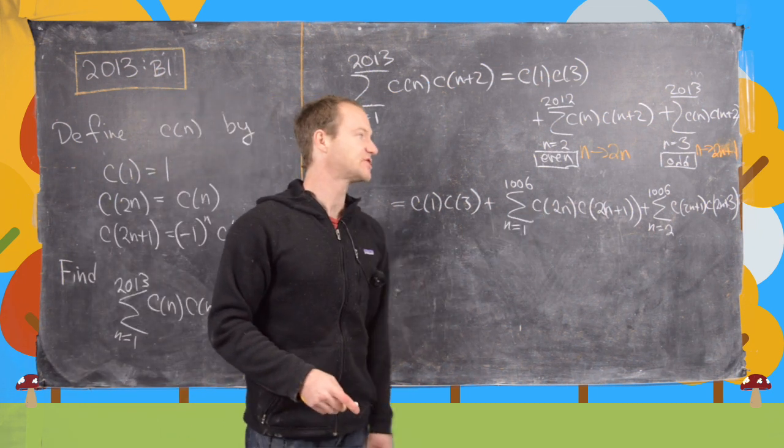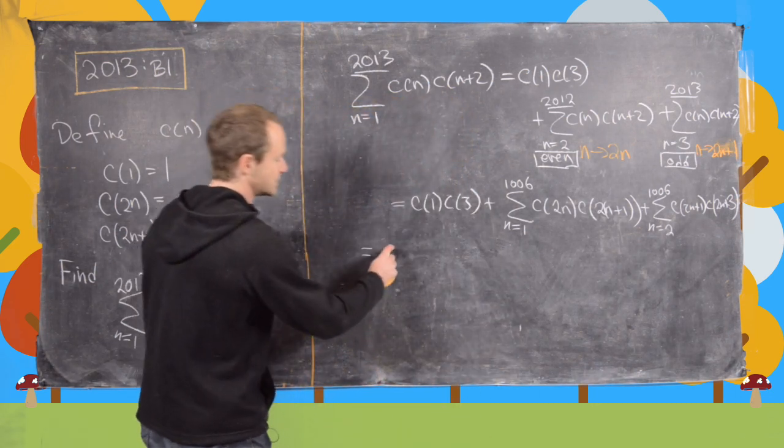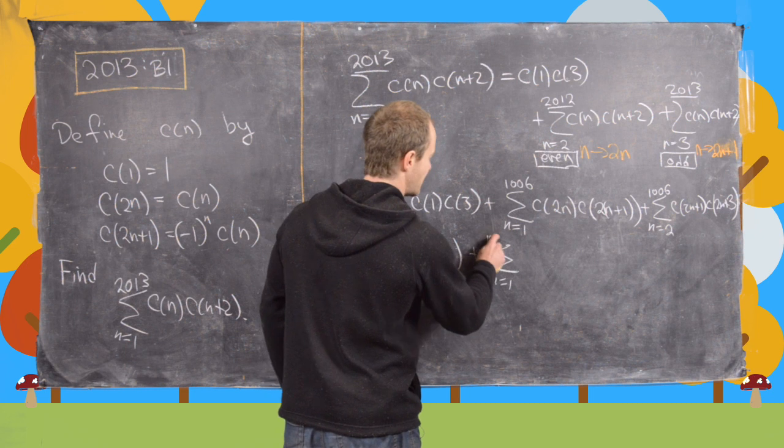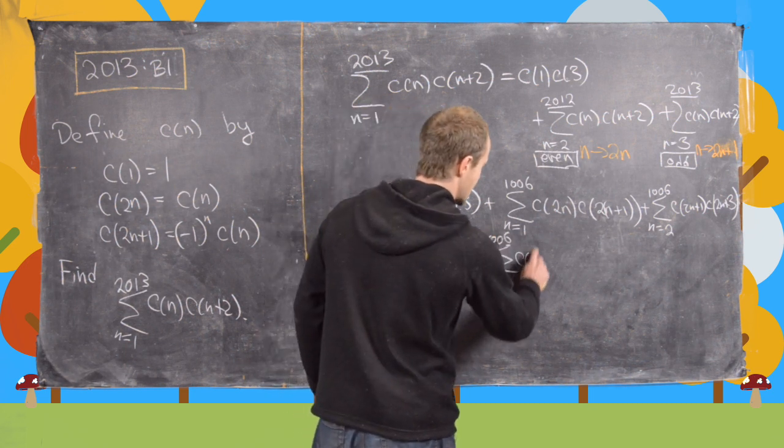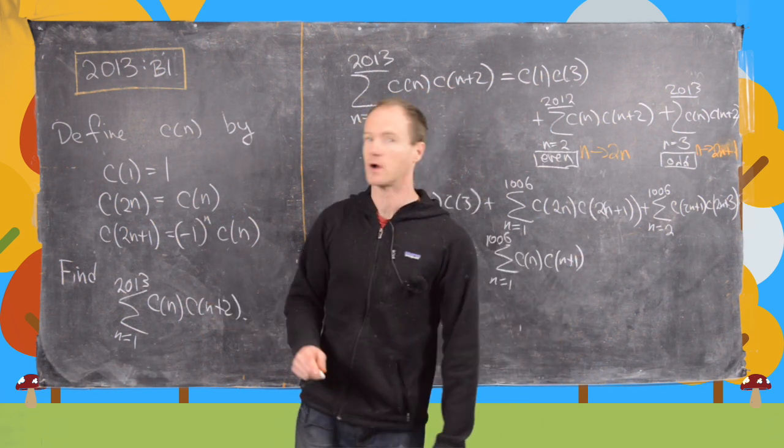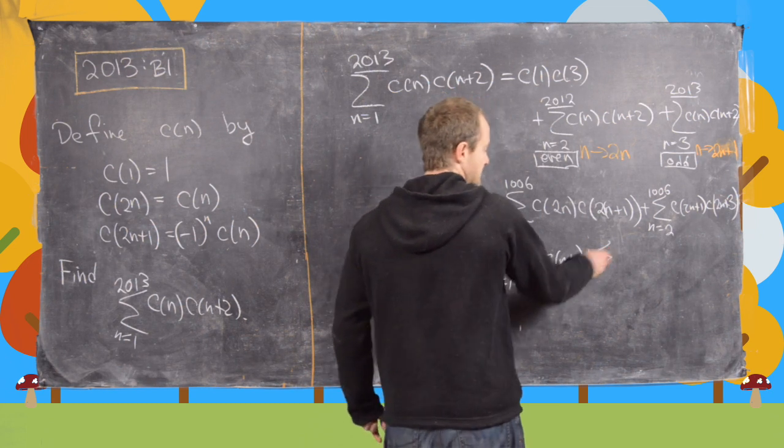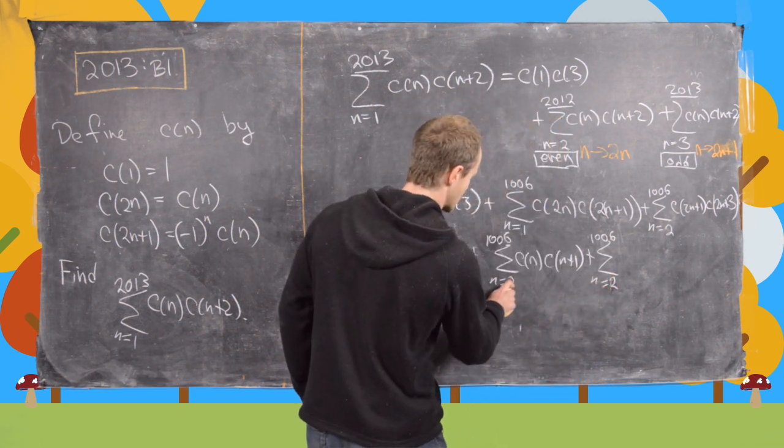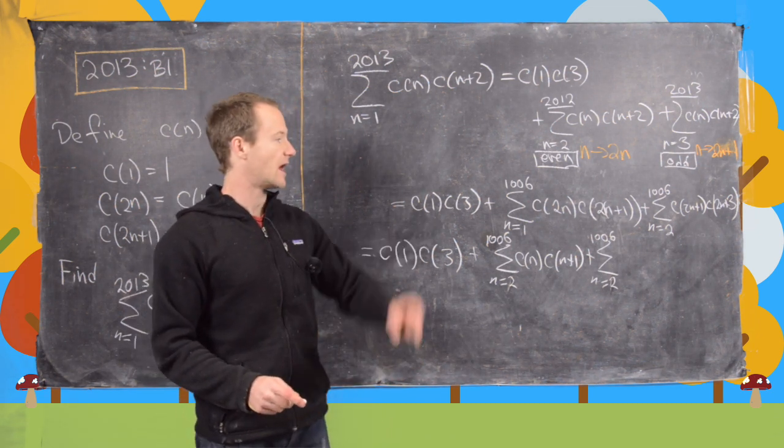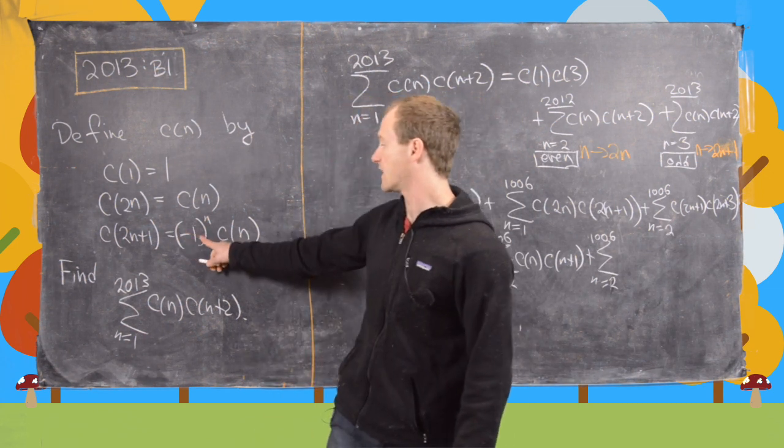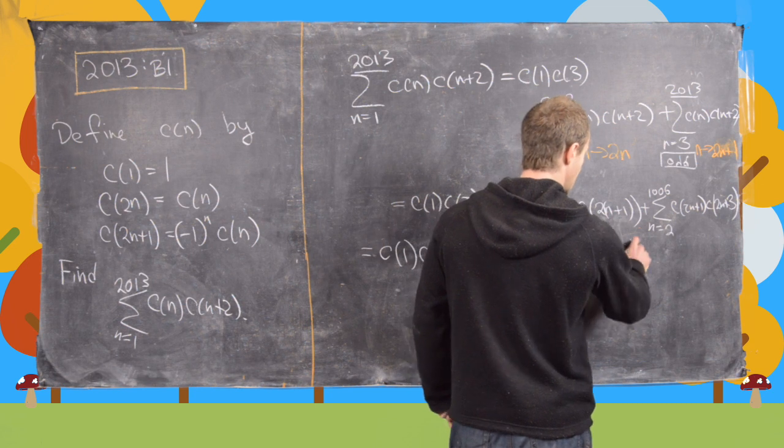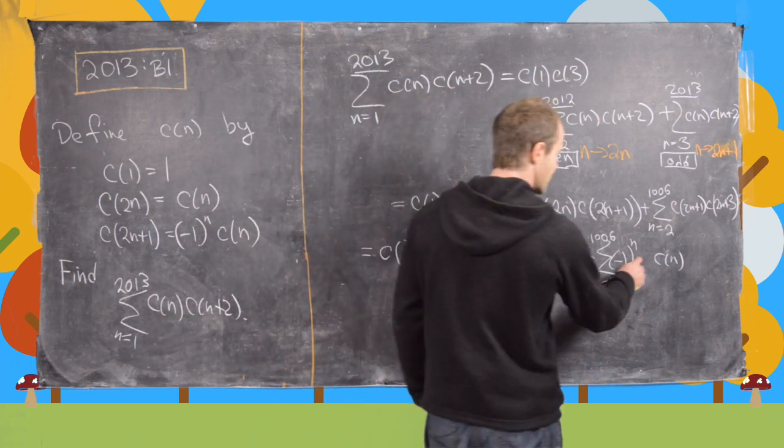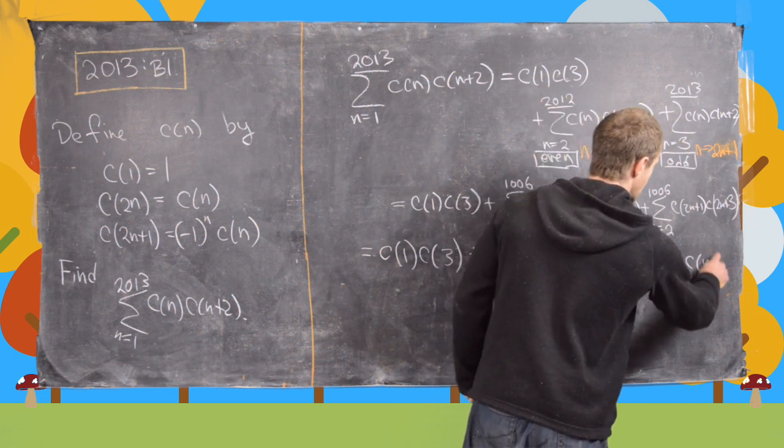But now what we can do is rewrite each of those sums using this defining recursion. So we have c_1, c_3, plus the sum n equals 1 to 1,006 of c_n, c_(n+1), using this even part of the defining recursion. And now we have plus the sum n equals 2 to 1,006. And then here we can replace c(2n+1) with (-1)^n times c_n. So here we have (-1)^n, and then c_n. And then we can take the c(2n+3) and use this recursion again to write that as (-1)^(n+1) times c_(n+1).